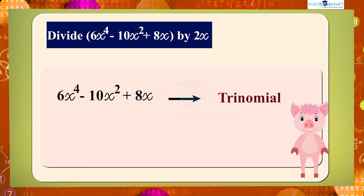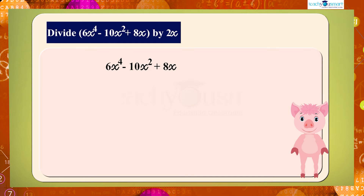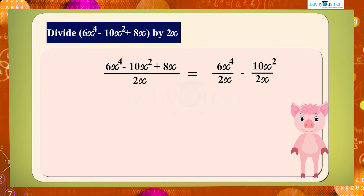The given polynomial contains three terms, so it's a trinomial. For dividing the trinomial by the monomial, we will separately divide each term by the monomial. That is, 6x raised to 4 minus 10x squared plus 8x, whole divided by 2x, equals 6x raised to 4 divided by 2x, minus 10x squared divided by 2x, plus 8x divided by 2x, which equals 3x cubed minus 5x plus 4.